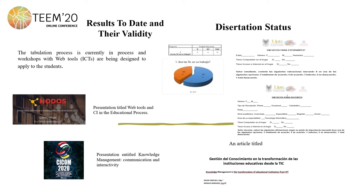Two questionnaire-type surveys with closed questions were designed and validated by two experts. They were subsequently applied to teachers and students through the model platform of the UPTC. As a result, 306 students and 20 teachers responded to the survey, which was carried out at the beginning of the second academic semester in August 2019, in order to determine the level of ICT performance between teachers and students.